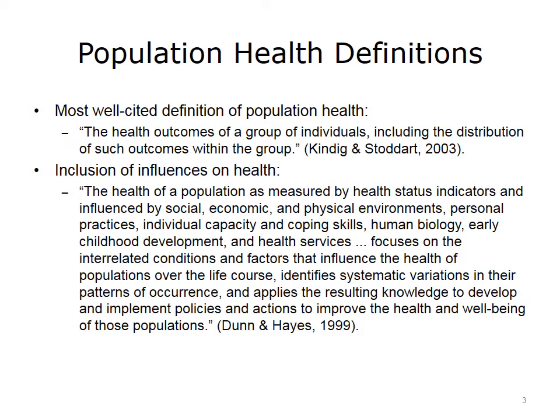The most well-cited definition of population health comes from an American Journal of Public Health article, "What is Population Health?" by Kindig and Stoddart, who define population health as the health outcomes of a group of individuals, including the distribution of such outcomes within the group.